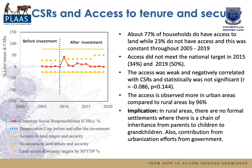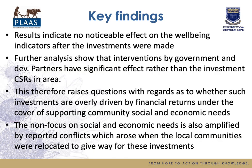On tenure and security: about 77% of households do have access to land tenure and security throughout the study period, while 23% do not. Access did not meet the national targets, and was weakly and negatively correlated — statistically not significant. Access was observed more in urban areas compared to rural areas, implying that in rural areas there are no formal settlement structures with chains of inheritance. Contributions from government urban efforts may have contributed to the observed results.